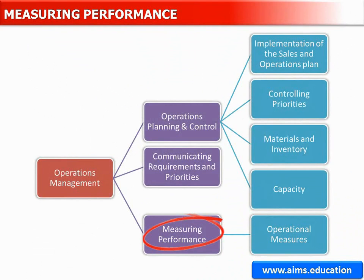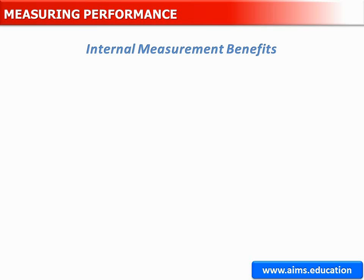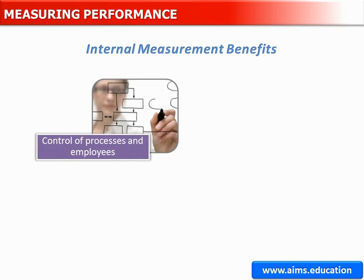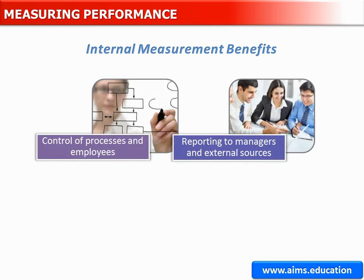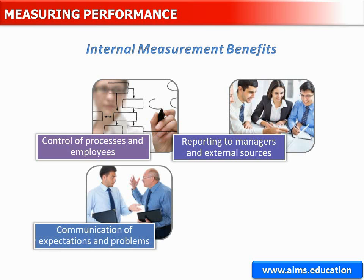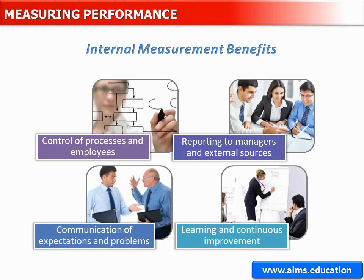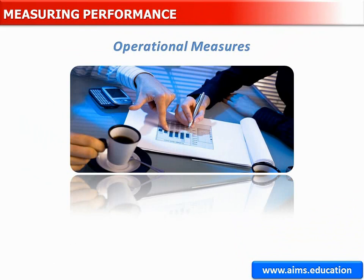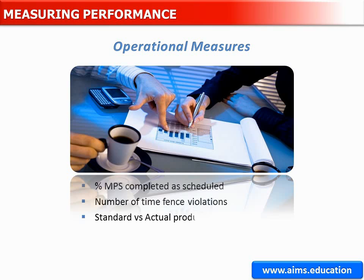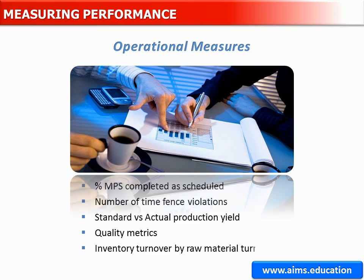Measuring performance of supply from internal resources can provide benefits such as: control of processes and employees; reporting to managers and external sources, for example financial reporting; communication of expectations and problems; and learning and continuous improvement. Performance measures should be objective, consistent, and quantified. Some key operational measures include: percent master production schedule completed as scheduled; number of time fence violations; production yield — standard or maximum yield versus actual yield due to scrap, waste, or other shrinkage; quality metrics; and inventory turnover broken down by raw material turns, etc.